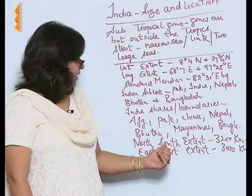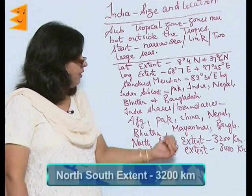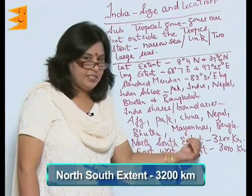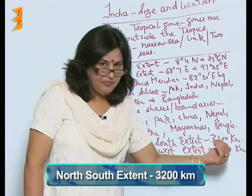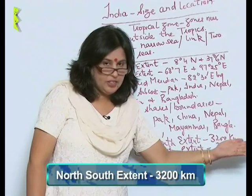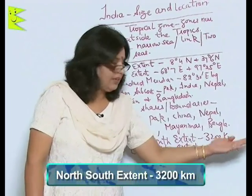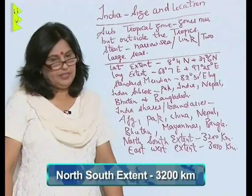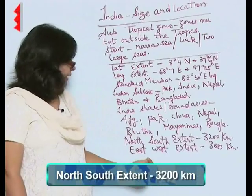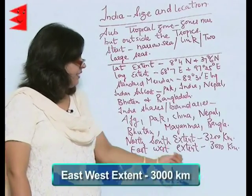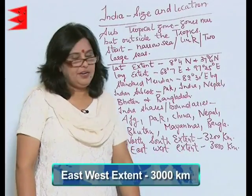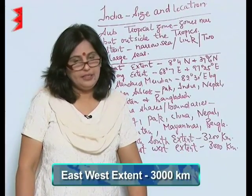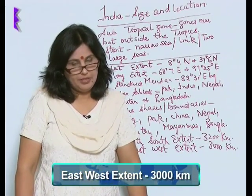The north-south extent of India is almost 3,200 kilometers, and the east-west extent of India is 3,000 kilometers.